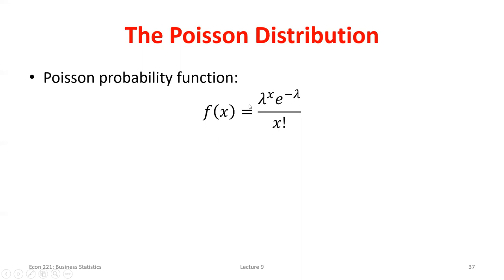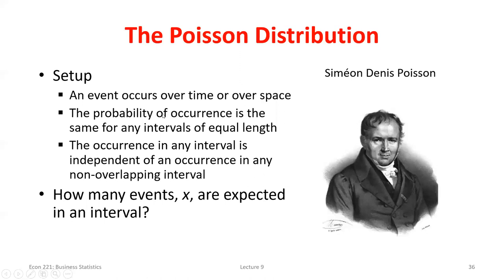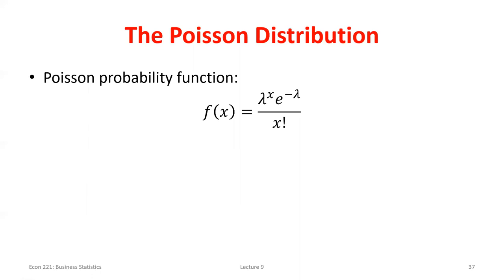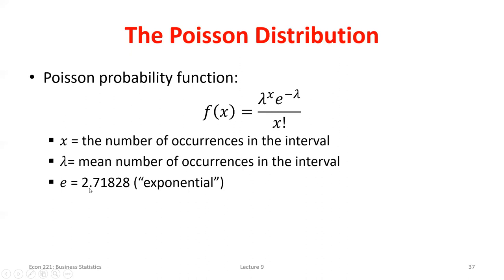The Poisson PMF is actually quite a bit easier because there are only two things to keep track of. The e is just a natural number — you can find it on your calculator, usually via a second function key, and it looks like a recursive e, approximately 2.71828. Lambda is the average rate we typically see over the interval — it has to be given to us. In my example with 10 accidents, that would be lambda. X is the number of occurrences we're interested in finding the probability of. So lambda is 10 accidents per week and x is, say, five this next week.